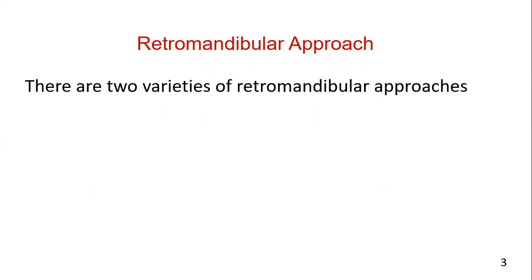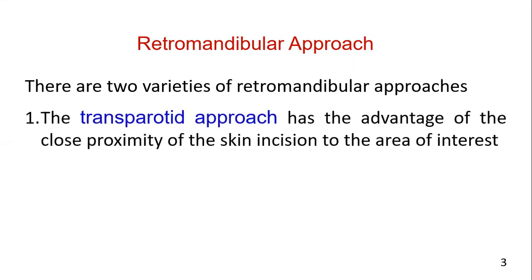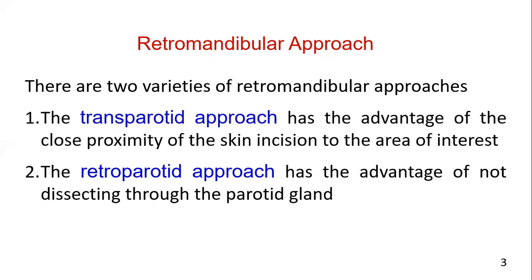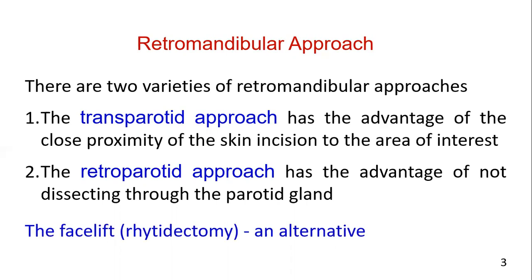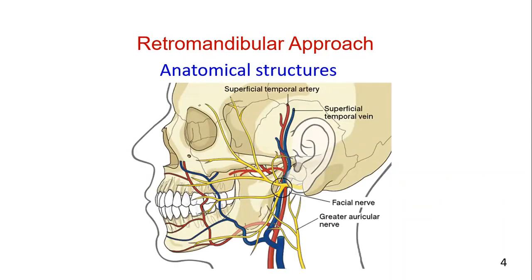There are two varieties of retromandibular approaches used to access the posterior mandible. They differ in placement of the incision and anatomic dissection to the mandible. The transparotid approach has the advantage of close proximity of the skin incision to the area of interest. The retroparotid approach has the advantage of not dissecting through the parotid gland. The facelift or retrodectomy approach can be considered as an alternative. The main anatomic structures at risk are the main trunk and branches of the facial nerve and the retromandibular vein.